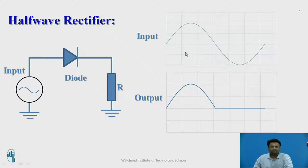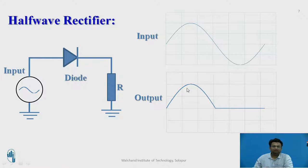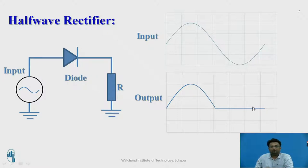During the positive half cycle of the input, the diode receives positive at the anode and negative at the cathode, so this positive waveform half section will be available at the output. Whereas during the negative half cycle, the diode's anode receives negative and cathode receives positive, causing it to act as an open circuit, and the output will be zero. We will see this effect by simulation of the half-wave rectifier in LTSPICE.